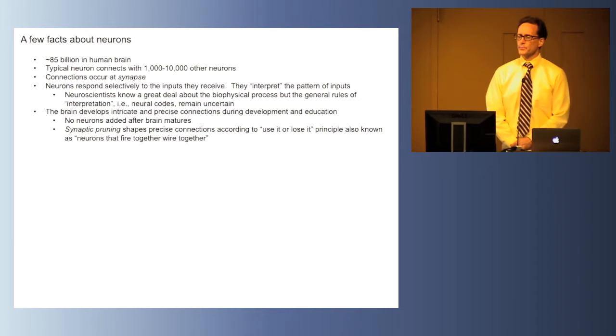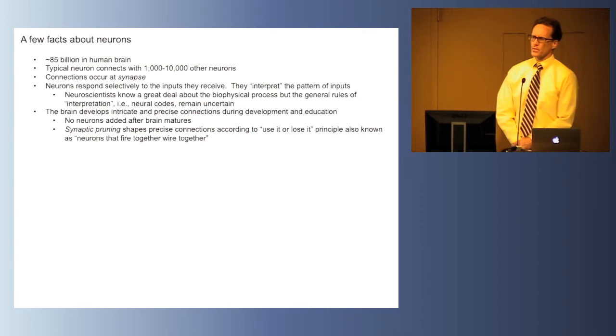The connections between neurons occur at a specialized structure called a synapse. Neurons respond selectively to the inputs they receive. There are complex biophysical processes in the dendrites that process the inputs. We don't mean process like a computer, but it's a nice metaphor to understand what's happening. The dendritic tree of the neuron interprets the pattern of inputs and how this interpretation happens is something that a lot of active research is working to understand.